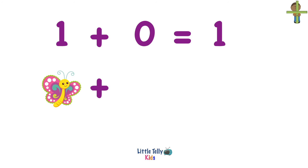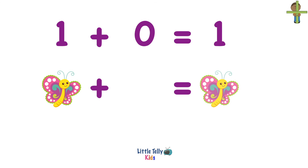Now let's solve another addition problem. 1 plus 0 equals 1. So 1 butterfly plus no butterflies equals only 1 butterfly, because when we say zero, there is nothing to add with the given number.